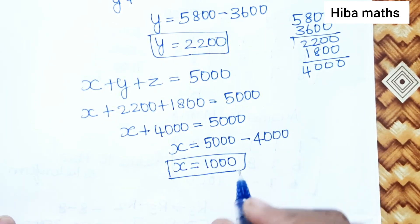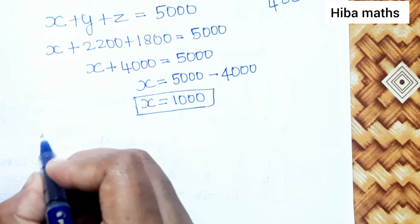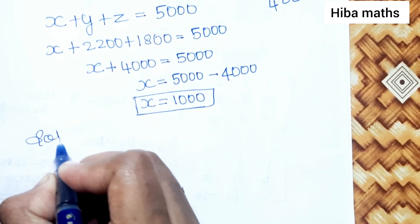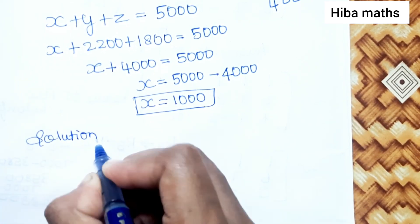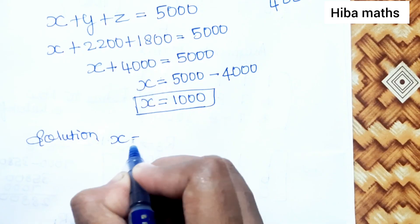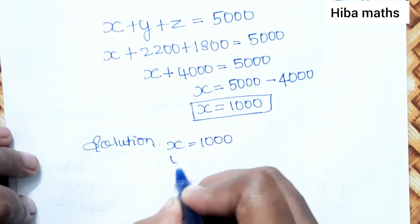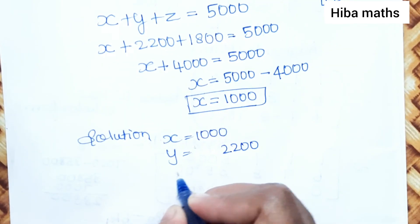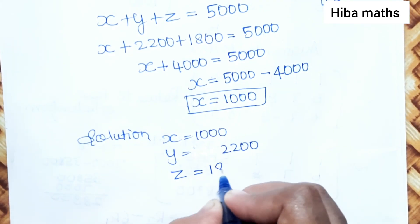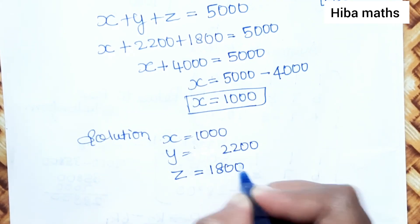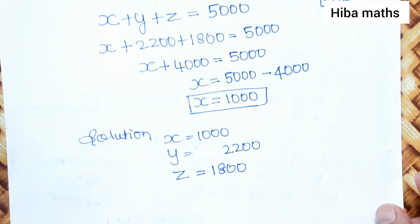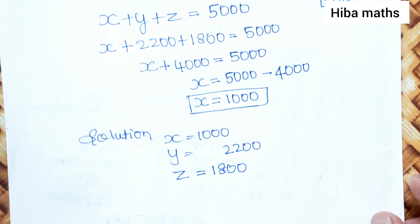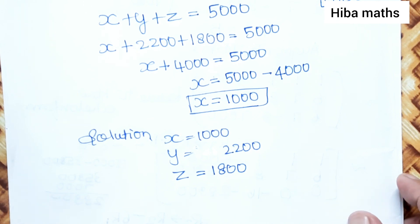Therefore the solution is: X equals 1000, Y equals 2200, and Z equals 1800. The amount invested in each bond is rupees 1000 at 6%, rupees 2200 at 7%, and rupees 1800 at 8%. Thank you so much for watching.